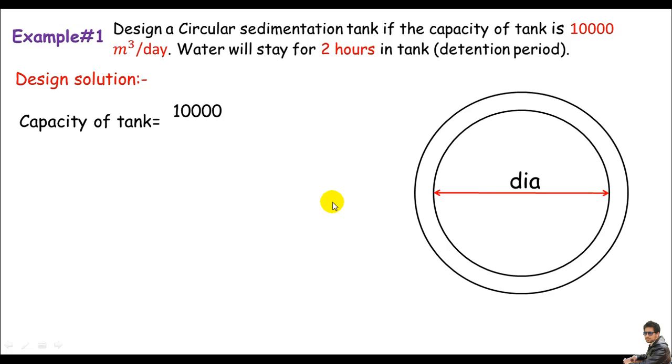I just divide this value by 24 because one day is 24 hours. If you see the water will only stay for 2 hours in the tank not for 24 hours or for one day. So I also just involve this factor in this capacity formula.